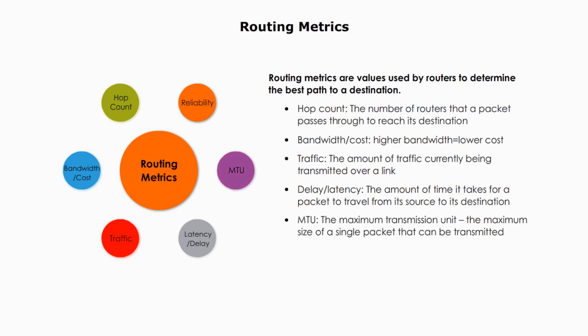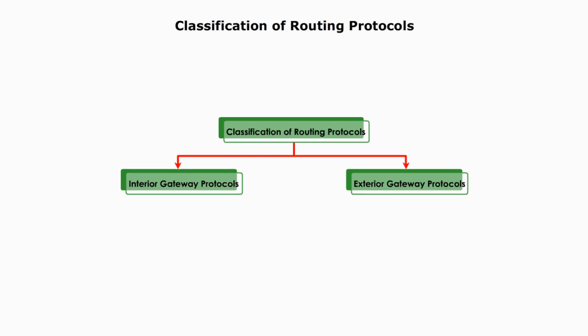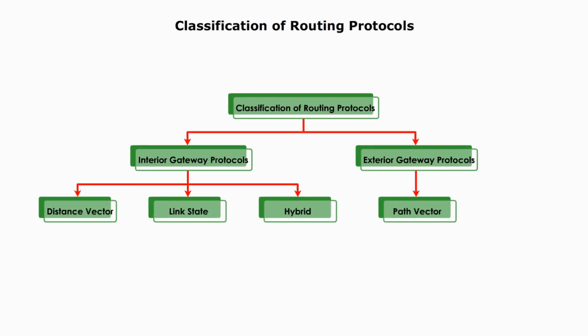Additional routing metrics include MTU (maximum transmission unit) — the maximum size of a single packet that can be transmitted — and reliability, which refers to the likelihood that a given link will fail or experience errors. Different gateway protocols use different routing metrics to calculate the best path.